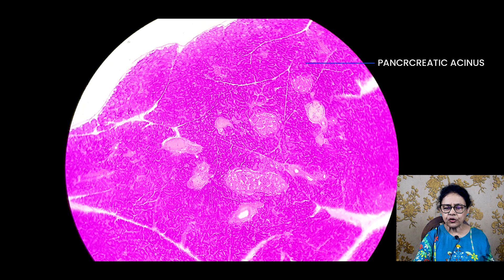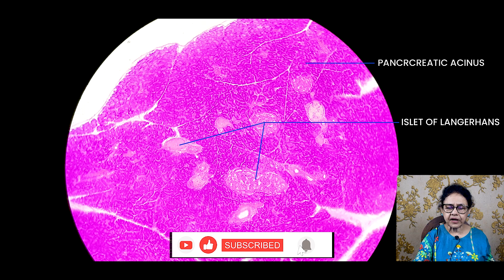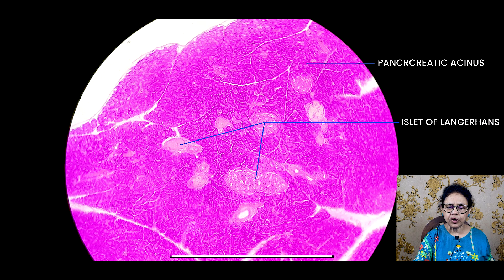And the endocrine portion of the gland is the light color stain, pale stain. This endocrine portion is known as islets of Langerhans. You know these islets of Langerhans secrete glucagon and insulin.